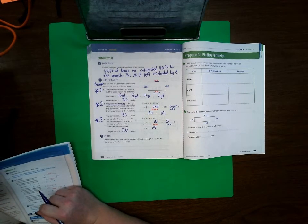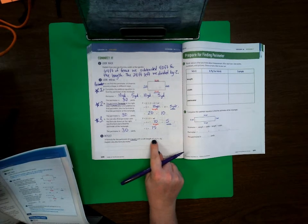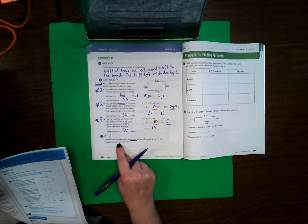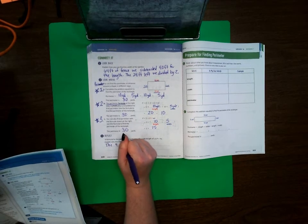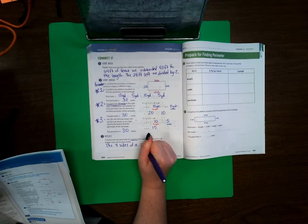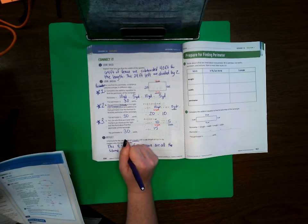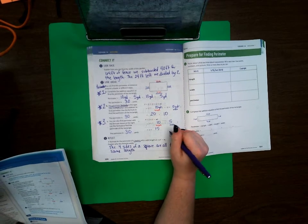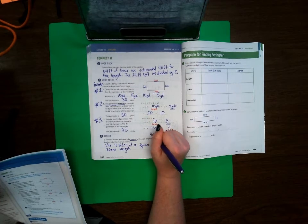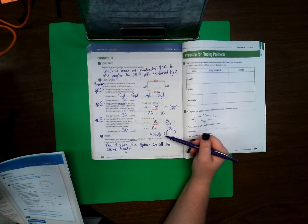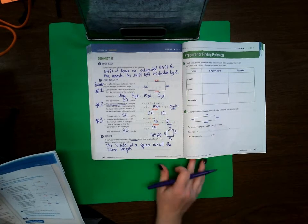Now at the bottom, a formula for perimeter of a square with the side length of s is p equals 4s. Explain why this formula works. Well, it works because the four sides of a square are all the same length. So if we have a square and it's 5, 5, 5, 5, we could do 4 times 5 equals 20 to get the perimeter, or we can add 5, 5, 10, 15, 20 and still get the perimeter. Let's go ahead and move on to page 331.